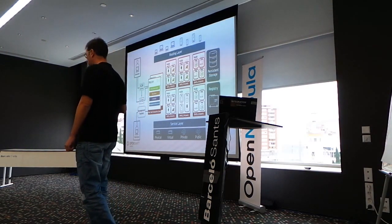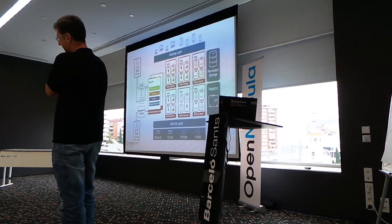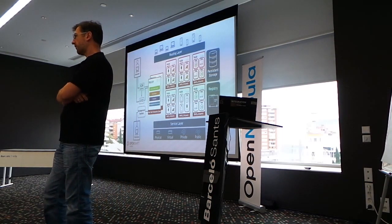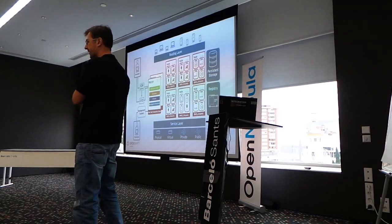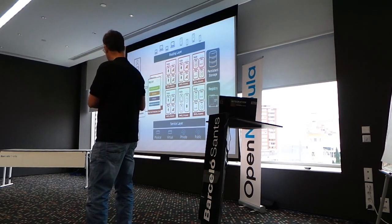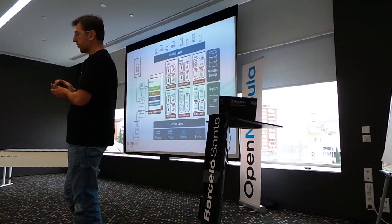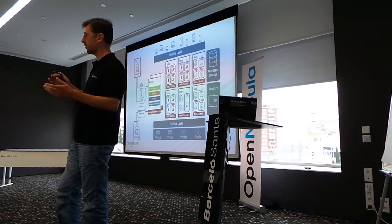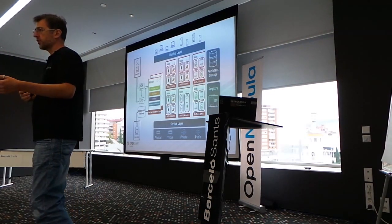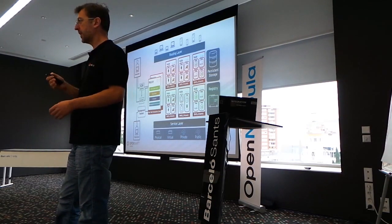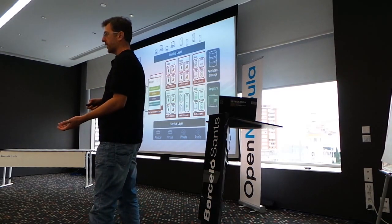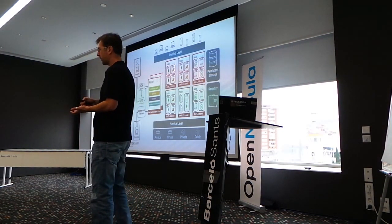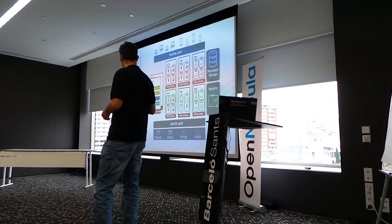We have two processes in the master: the scheduler and the replication controller. The scheduler tells OpenShift where to run workloads. In a highly scaled environment you will have dedicated infrastructure for development, testing, staging, and production environments, and you can segregate between front-end and back-end. Depending on what type of application you create, the scheduler will determine where to run those pods or containers.